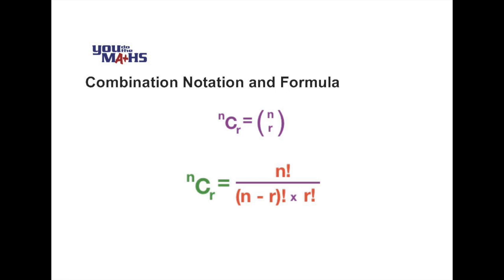You can use the capital C, so it's n and r written as superscript and subscript, or you can refer to n choose r in a bracket notation as you would do for a column matrix. And the formula for n choose r is equal to n factorial over n minus r in brackets factorial multiplied by r factorial.